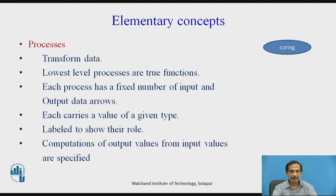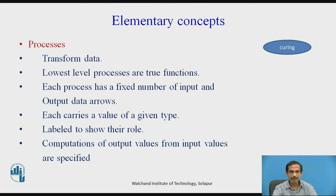The first concept we study here is a process, represented as a shaded ellipse. Curing might be an example of a process. In a process, we transform data. The lowest-level processes are true functions of their own, and each process has a fixed number of inputs and outputs, which are data arrows. Each carries a value of a given type labelled to show their role, and computations of the output values from the input values are specified.